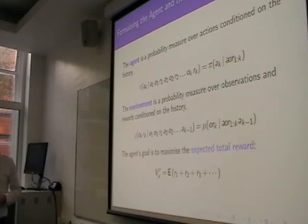The environment, we just essentially do the same thing, but it's the other side of the interaction. So, we have a distribution over what the next observation and reward are, given the entire history so far. And the agent's goal is to maximize total expected reward. And so, this is the V function here. So, this is the interaction between our agent π, the environment μ, and the expected amount of reward it gets is the expectation.